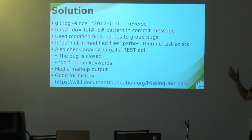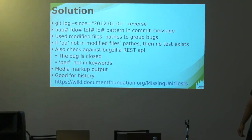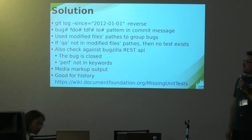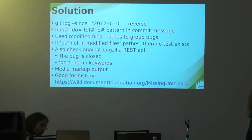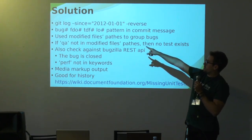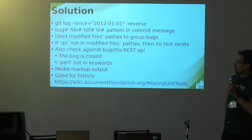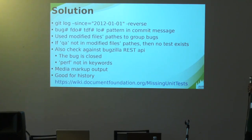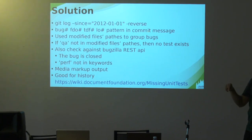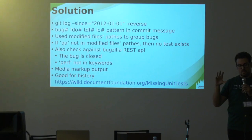So doing it in reverse order, the script looks for the pattern — normally nowadays we use the TDF pattern, but in the past we also had FDO, bug, or LO patterns. For each commit we check the modified files in that commit.